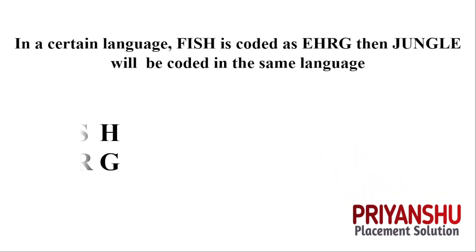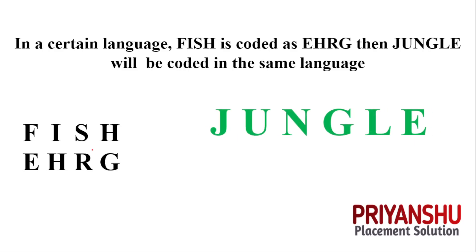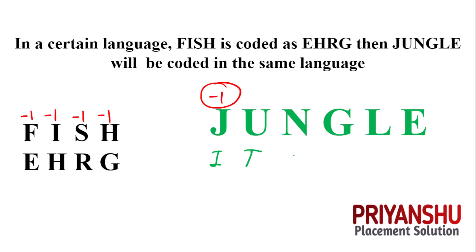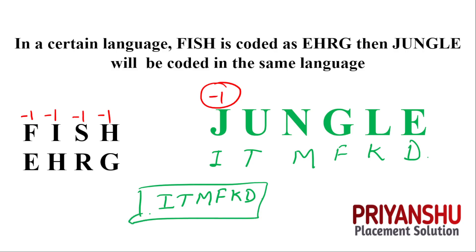The next question: in a certain language, 'fish' is coded as something and 'jungle' is coded as something. F to E: 6 to 5, minus 1. I to H: 9 to 8, minus 1. S to R, H to G — every letter minus 1. So for 'jungle': J minus 1 = I; U minus 1 = T; N minus 1 = M; G minus 1 = F; L minus 1 = K; E minus 1 = D. The correct answer is I-T-M-F-K-D.